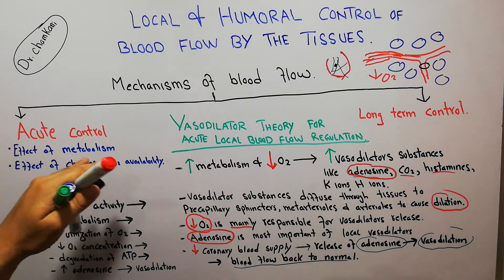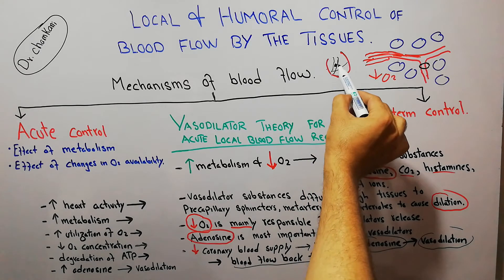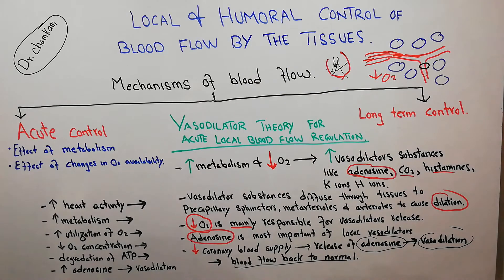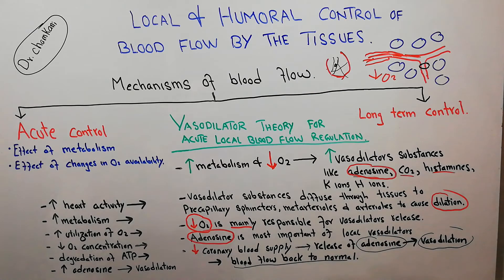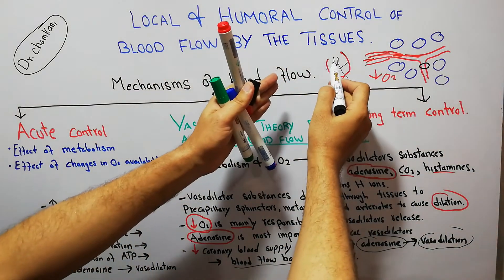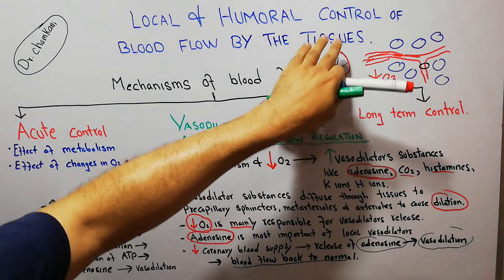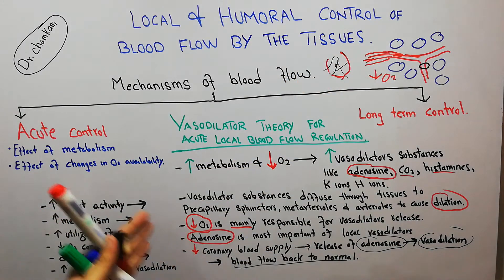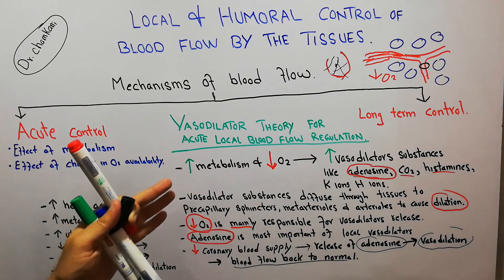The released adenosine causes vasodilation, leading blood flow back to normal. This example explains the acute control of blood flow via vasodilator theory: a block in the coronary artery causes decreased blood flow, which leads to increased adenosine release, adenosine causes vasodilation, the blood vessel increases in size, and blood flow is restored rapidly.